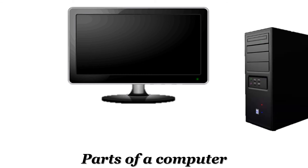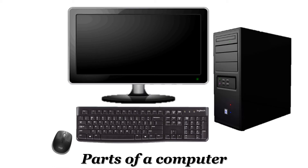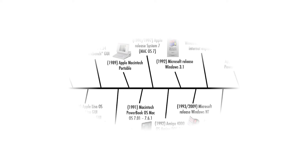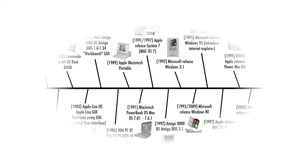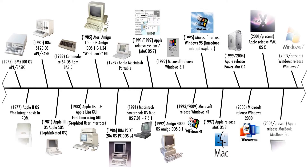The world today revolves around technology and the main part of technology are computers. So, before we move on, let me tell you the main parts of a computer: the monitor, CPU — also called central processing unit — the keyboard, the mouse and the speakers. Computers did not become the all wonderful products of today overnight. They took time, approximately 30 or 40 years to become what they are now. Let us have a look at the timeline of the evolution of computers.